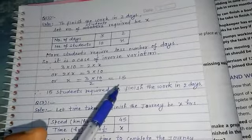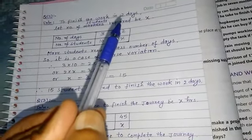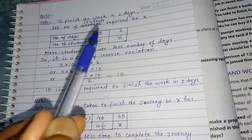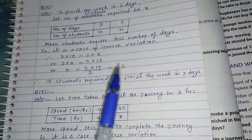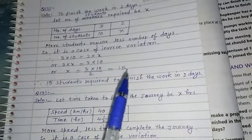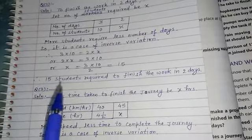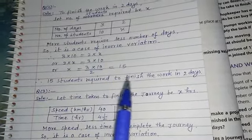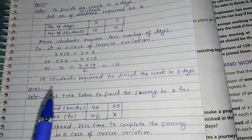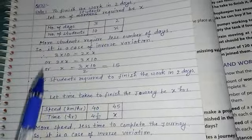This means if we want to finish in two days, instead of ten students, how many students are required? Fifteen. Five more students. So therefore, answer: fifteen students required to finish the work in two days.